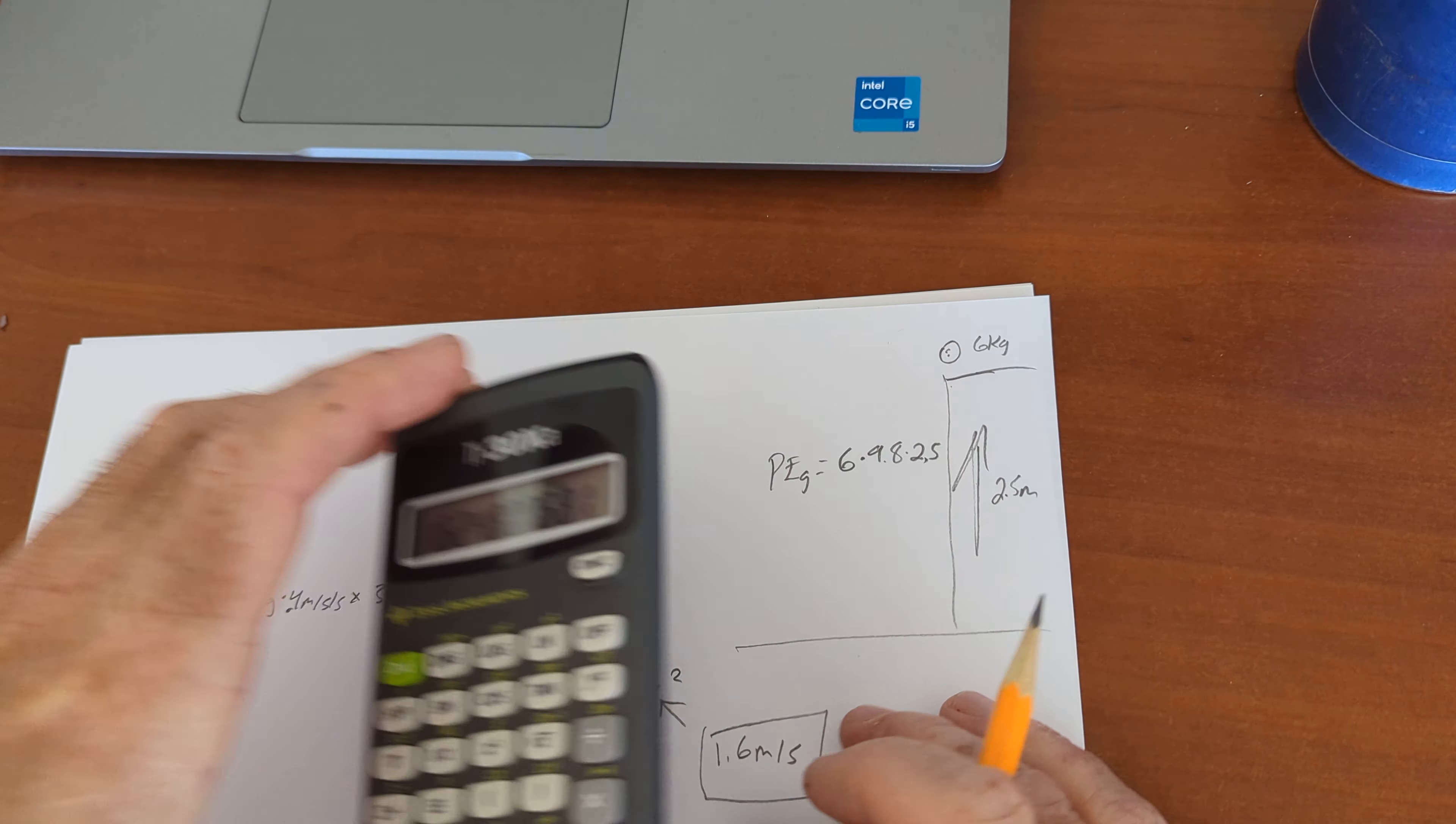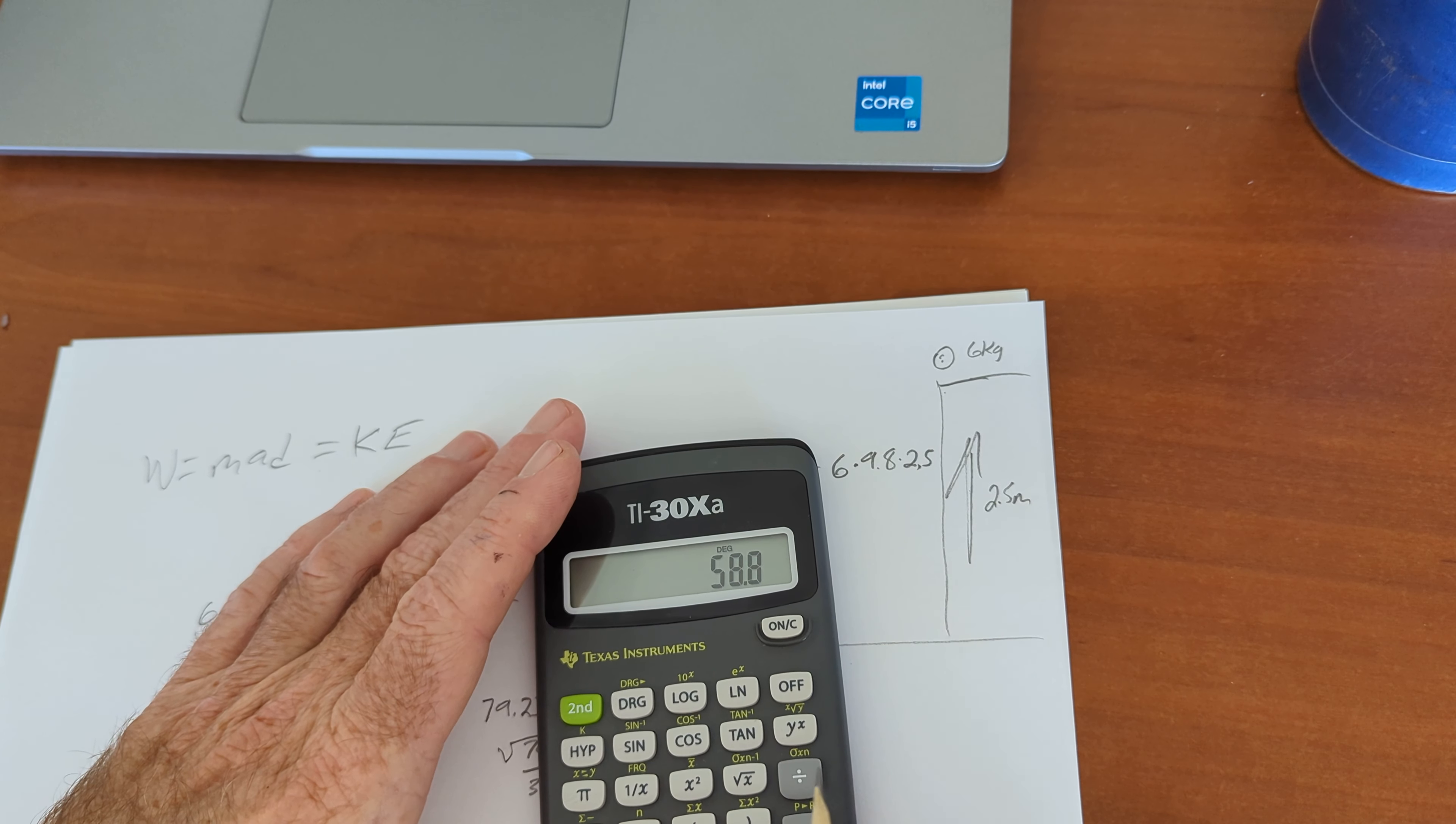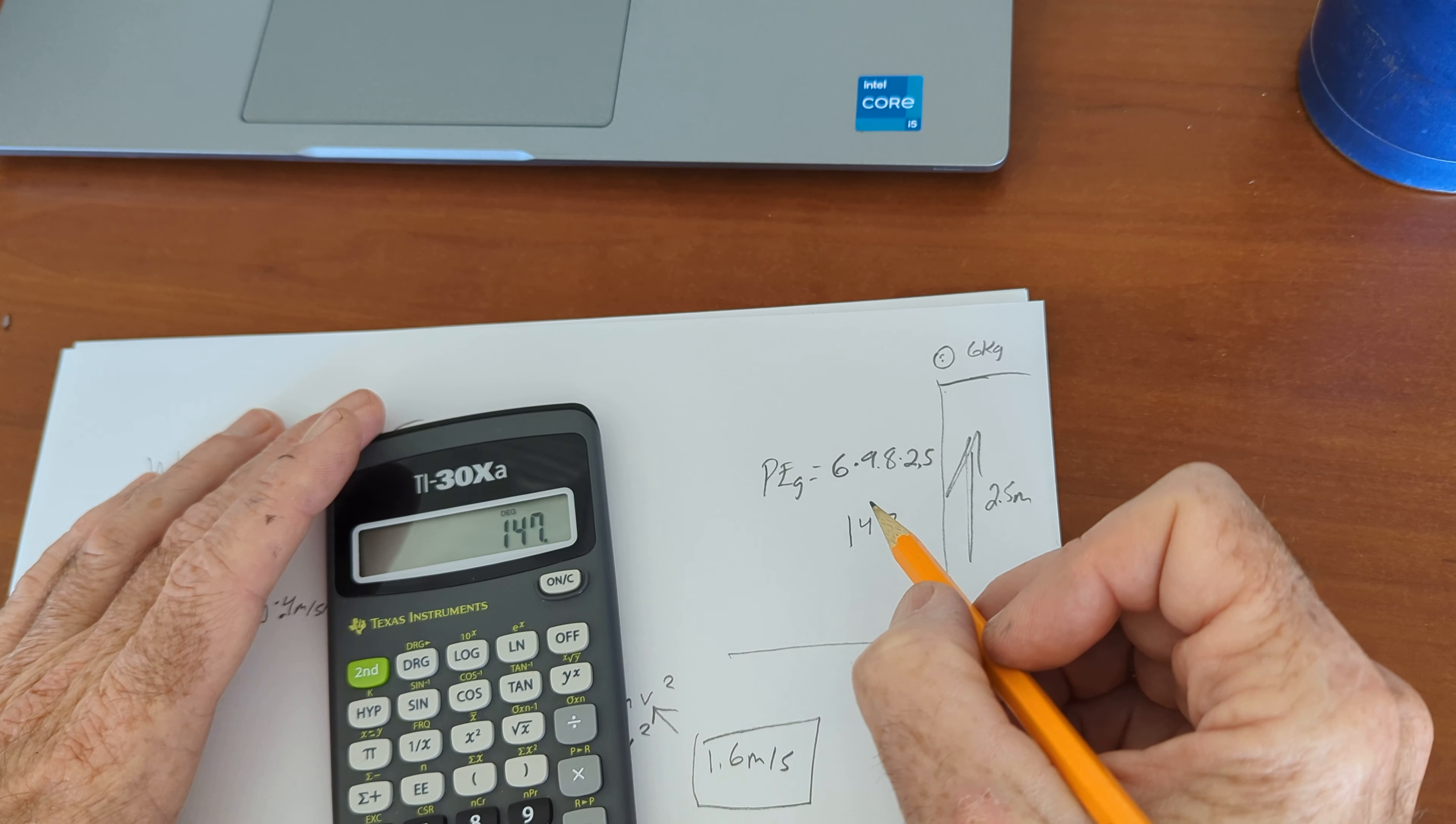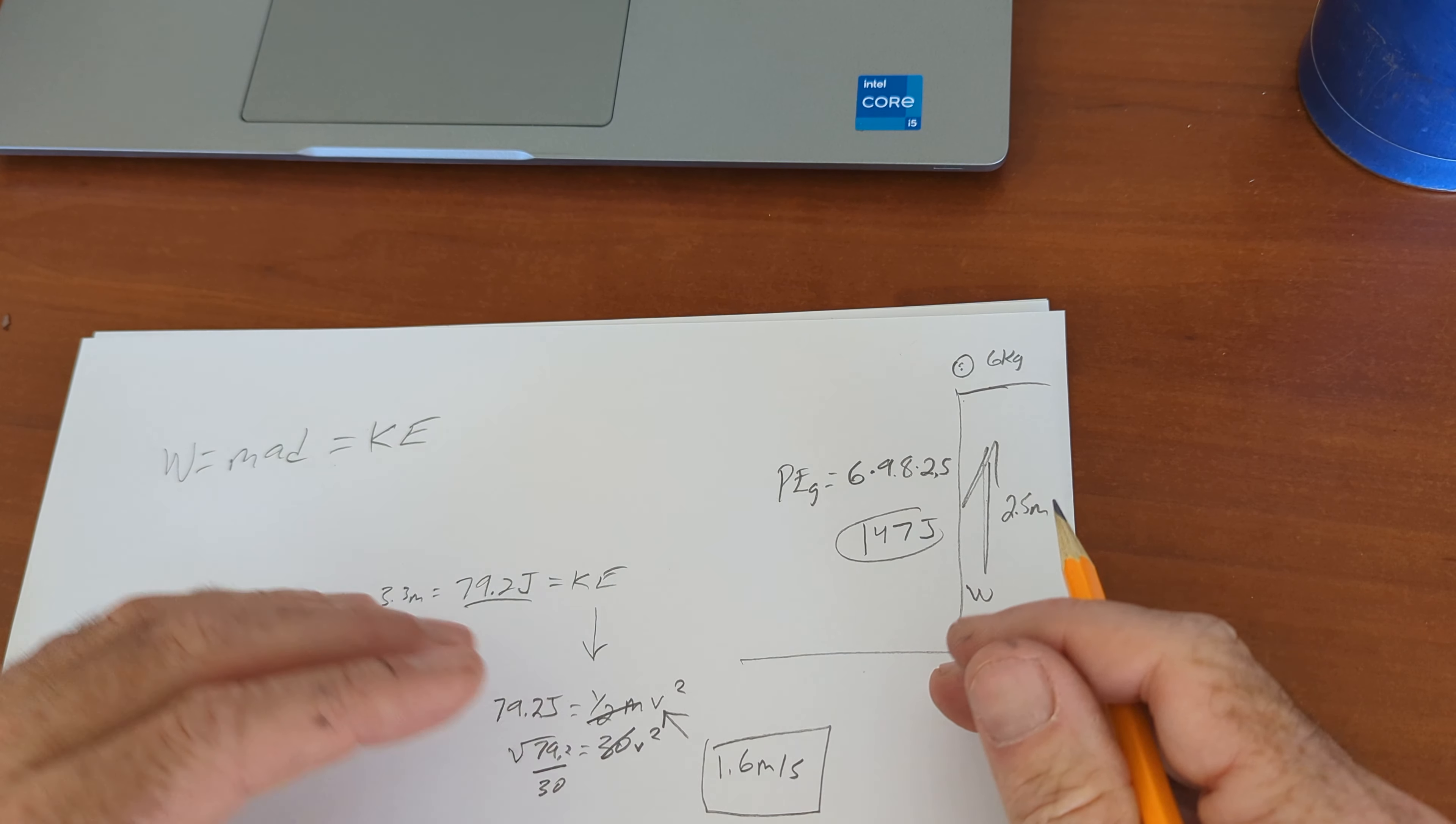Too easy. Six times 9.8 times 2.5. 147 joules are stored up there. How much potential energy is stored? How much work did you do? Same thing. You had to do the work to get it up there to store the energy.